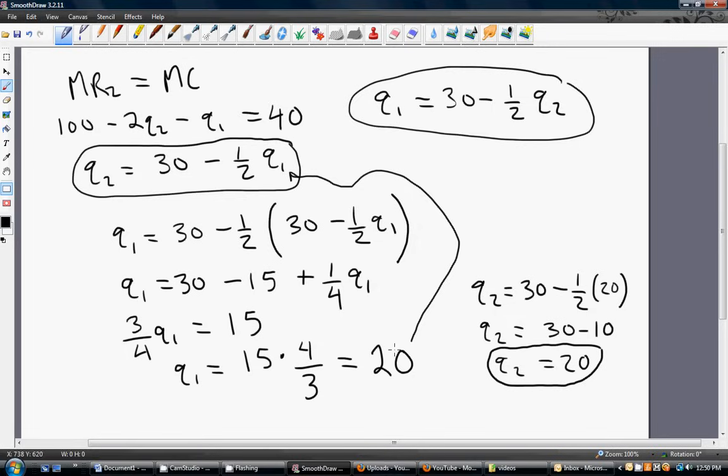Next thing we should get is the market price. So the market price P equals, what was our inverse demand? It was 100 minus Q. And so in this case, 100 minus 40. The total industry output is Q1 plus Q2. So we get a market price of $60.